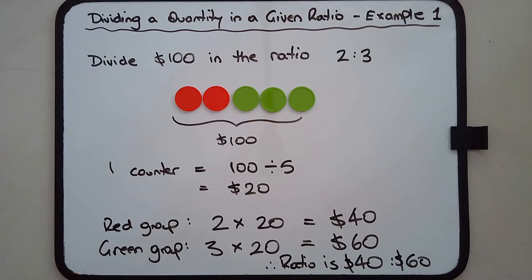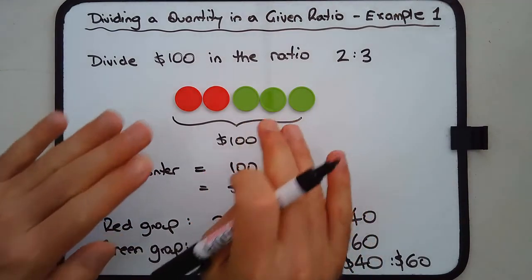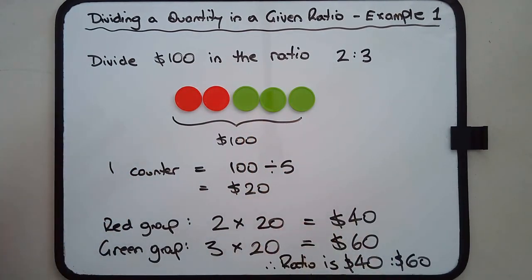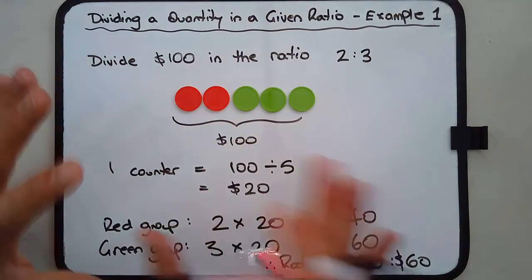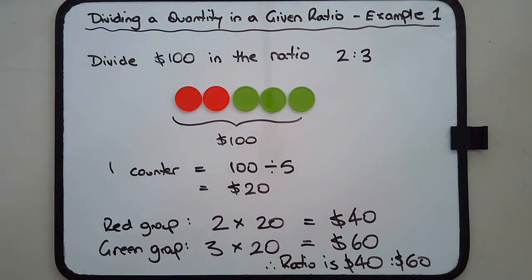And that's how we divide a quantity in a given ratio. Of course, you don't have to use counters, but it is one way of visualizing what is going on. As you practice this, you'll get better at it. You're not going to have to use these counters or anything like that. But initially, if ratios are something that you struggle with, it's always good to think about an actual object or think of something that can represent that value.